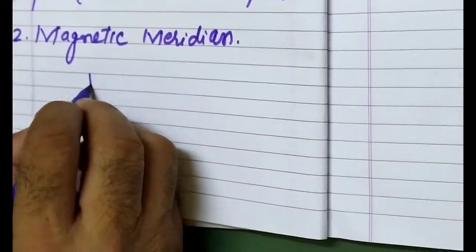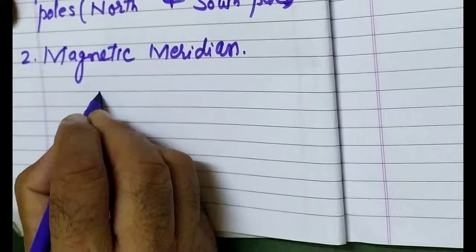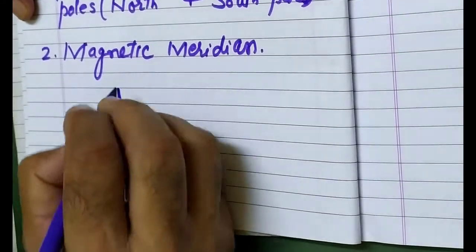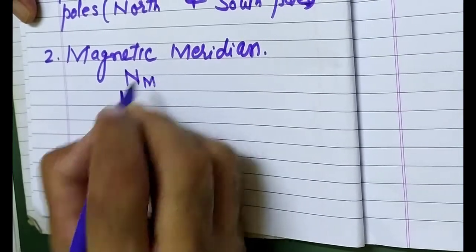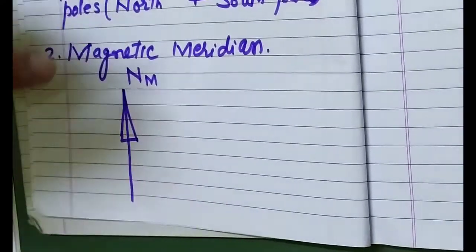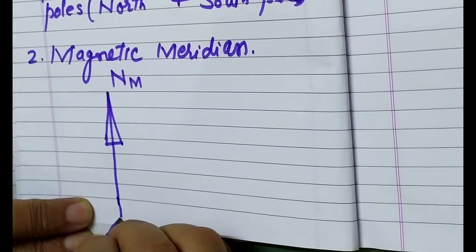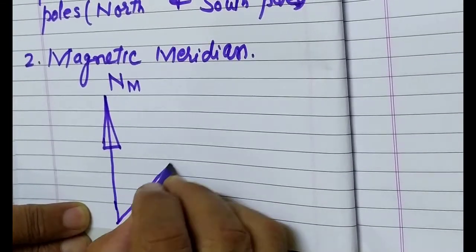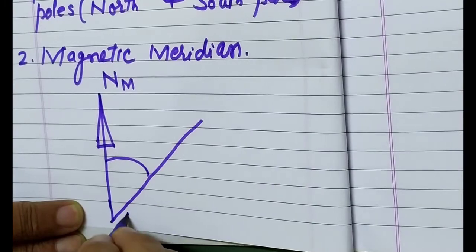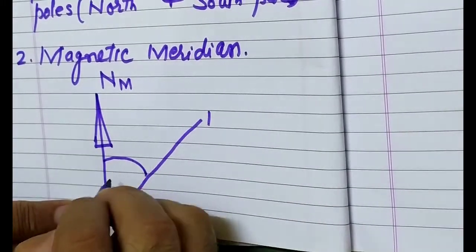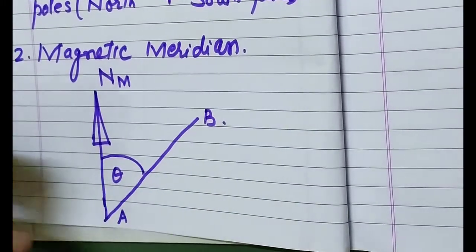This north, if we are going to measure with the help of a prismatic compass, is known as magnetic north. Any angle that any line makes horizontally with it is the bearing of the line. I can say this is line AB, so theta is the bearing of the line.